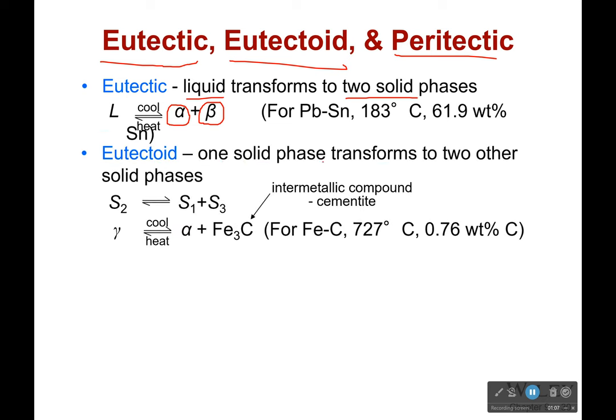Now eutectoid is when we go from one solid phase, and it transforms to two other solid phases. So what does this mean? Well, this gamma iron has some of this intermetallic compound before it gets heated up. This gamma iron does not exist. And all we have is what's called alpha iron, which is ferrite, and this very hard compound called cementite.